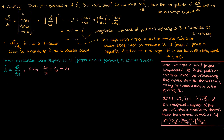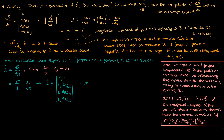Going back to our definition for the four velocity U, we can re-express this using the chain rule as the product of dX/dt times dt/d tau. We already showed what dX/dt was earlier, and Equation 1 tells us that dt/d tau is gamma. When we plug those in, this is what we get for our four velocity U — I'll call this Equation 2.